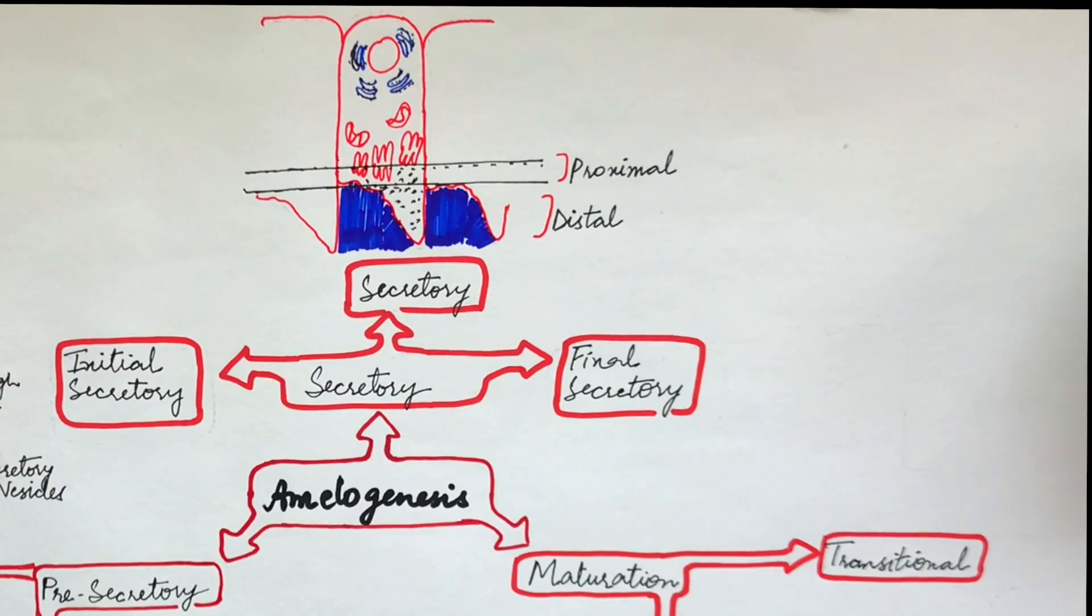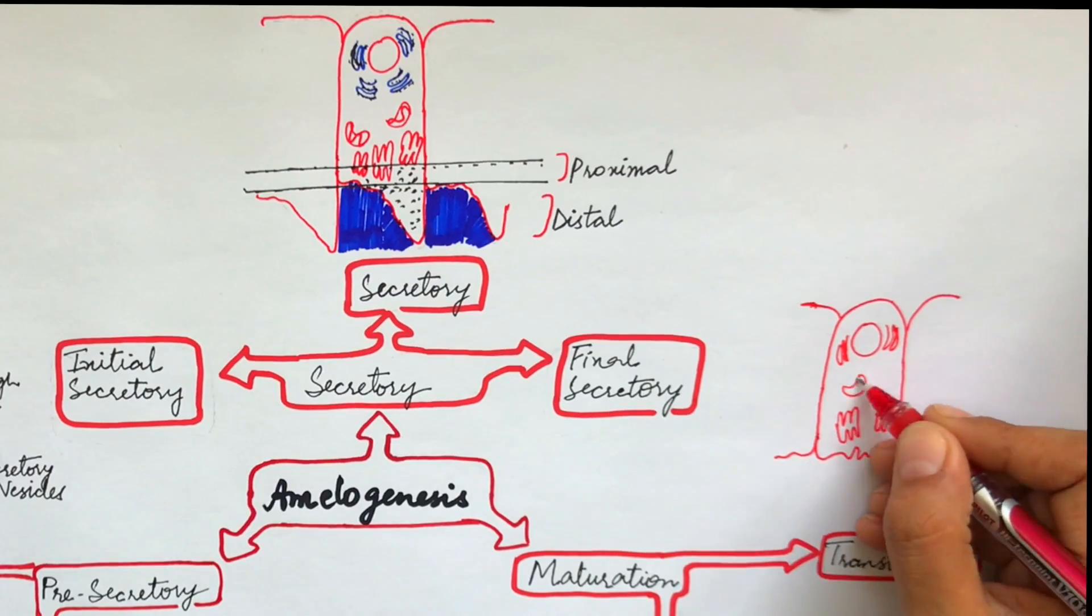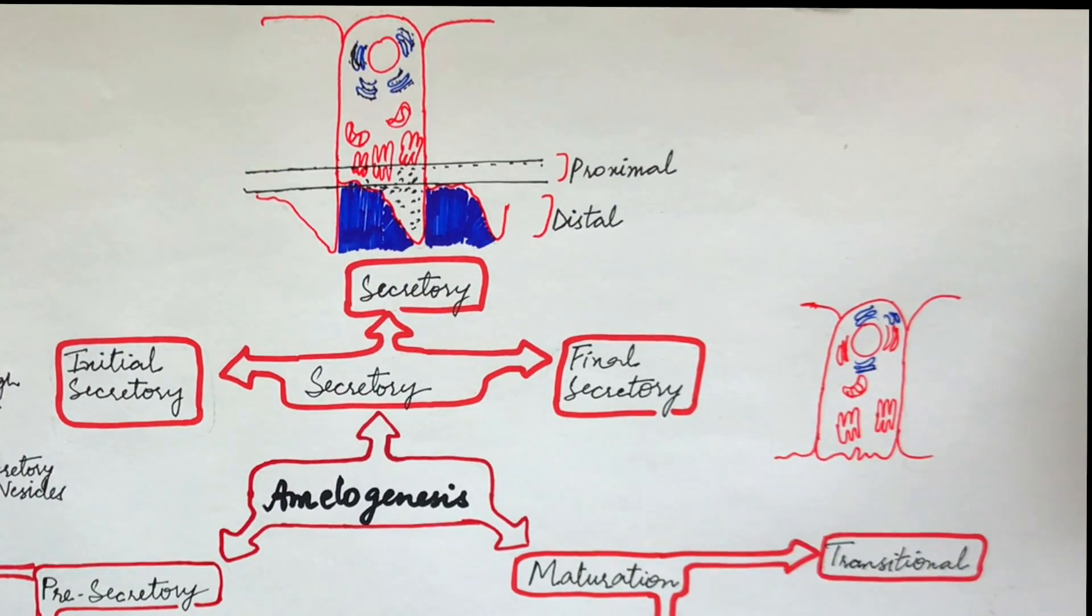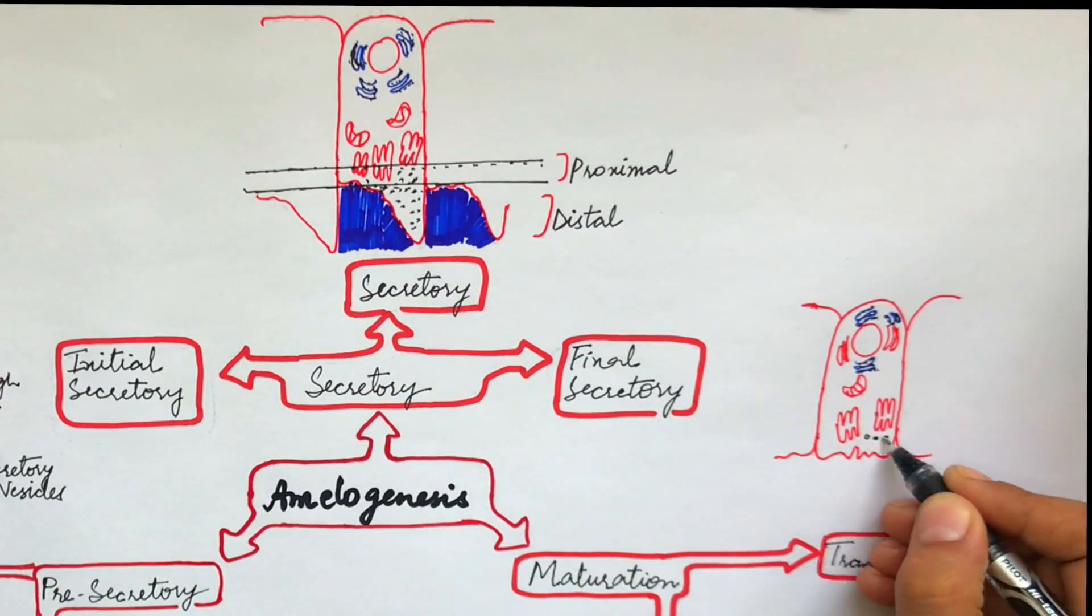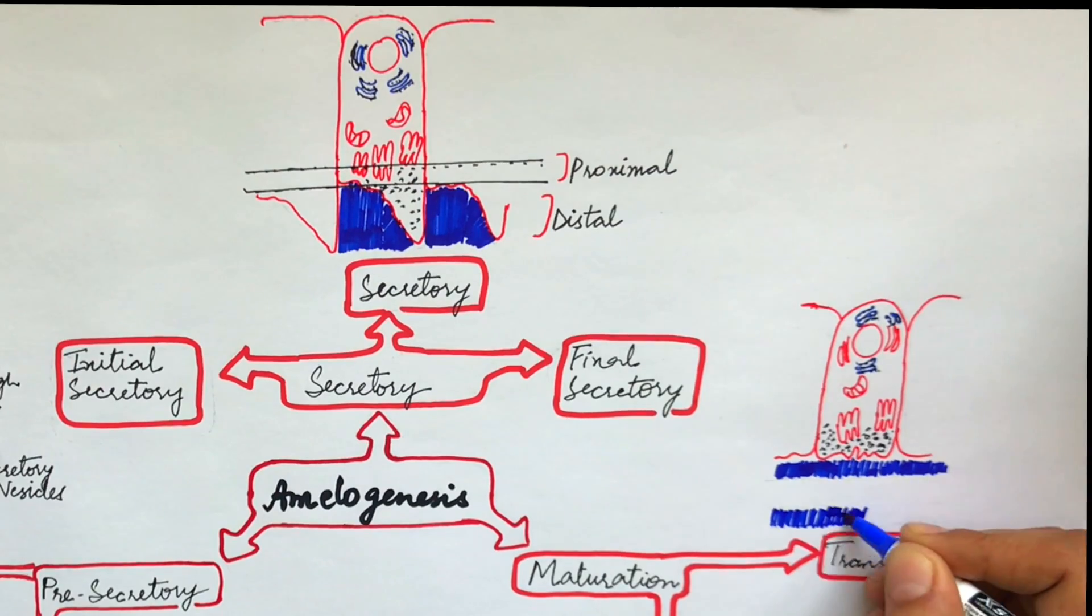After the enamel has reached its maximum thickness, the ameloblasts become shorter and lose their distal portion of Tomes' process. Ameloblasts now have the same overall appearance as when they were forming the initial layer of enamel. These cells now secrete the final layer of enamel same as the initial layer of enamel without any rods and inter-rods.